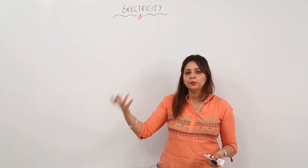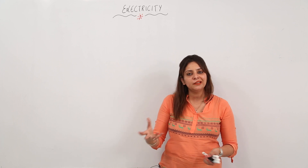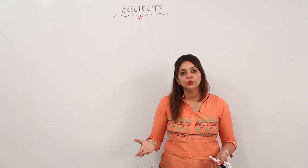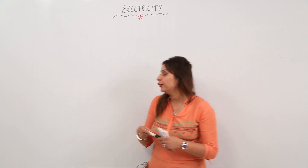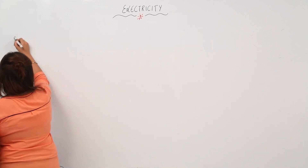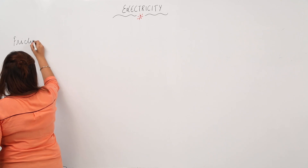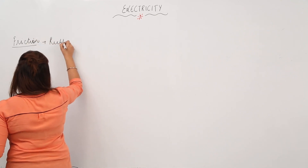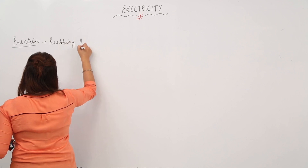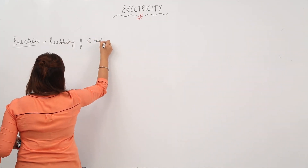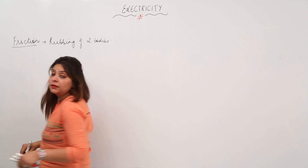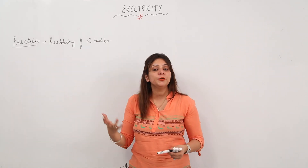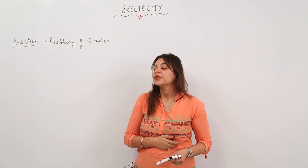Earlier there were no tube lights, no bulbs — they had lanterns and things like that. But still, electricity came into view. How did it come? You should know what friction is: friction is the rubbing of two bodies. The first thing that led to the development of electricity was friction.